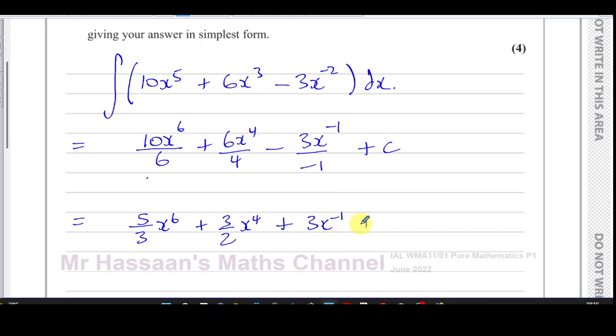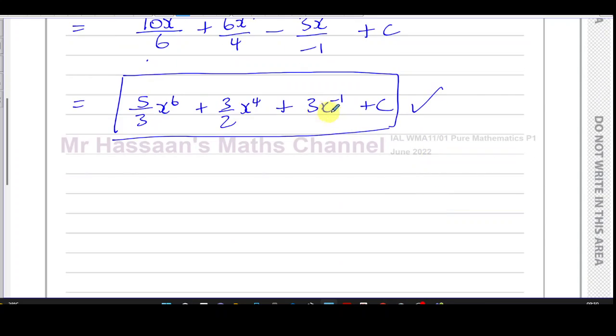That's perfectly fine as your answer. Now if you want, you can write this term differently - you can write 5 over 3 x to the power of 6 plus 3 over 2 x to the power of 4, and this can be written as 3 over x using the same law of indices. X to the power of minus 1 is the same as 1 over x, so 3 times x to the power of minus 1 is 3 over x, plus c.